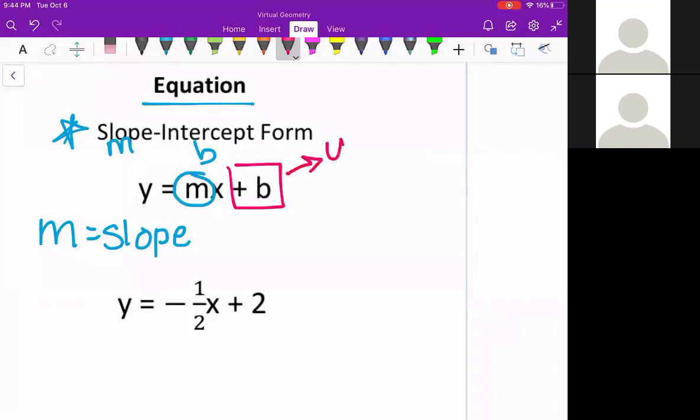While your b, which is the constant, this is our y intercept. And this could be seen a couple of different ways. Sometimes it's expressed just as a single b, or sometimes you might see it as a coordinate (0, b).